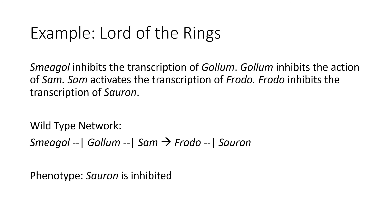To show how a developmental network works, let's look at an example using some characters from Lord of the Rings. Smeagol will inhibit the transcription of Gollum, who in turn inhibits the actions of Samwise Gamgee. Sam activates the transcription of Frodo Baggins, who inhibits the transcription of Sauron. In a wild-type network, like shown here, the resulting phenotype is Sauron being inhibited.